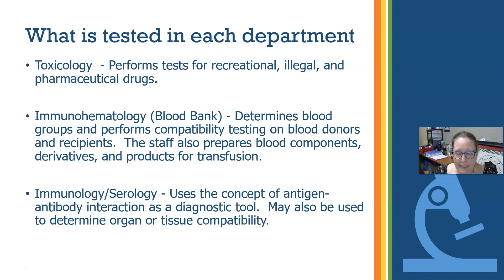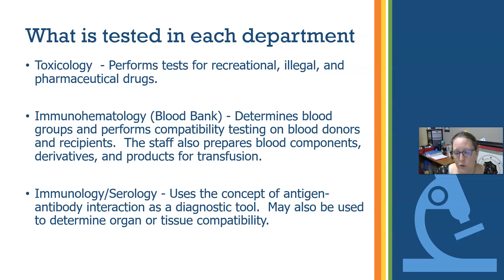Immunohematology, also known as blood bank, determines blood groups and performs compatibility testing on blood donors and recipients to make sure the blood matches the recipient so there's no reaction. Staff can also prepare blood components, blood derivatives, and products for transfusion — packed red cells, fresh frozen plasma, cryoprecipitate — all properly matched to be as safe as possible for the patient.